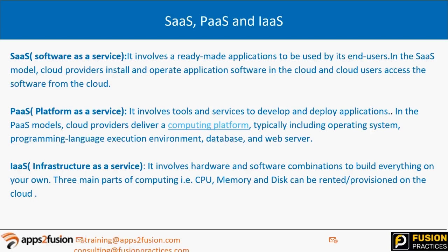SaaS involves a ready-made application for end users. In the SaaS model, the cloud provides you with the application pre-installed — we as consultants get a username and password, log in, and start implementing. We don't need DBAs to install the application in SaaS. In PaaS — Platform as a Service — you also get the computing platform as well as the middleware component, allowing customizations. You cannot customize the application under SaaS licensing.